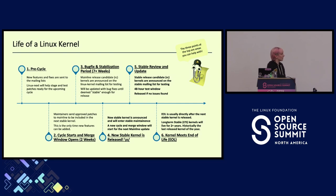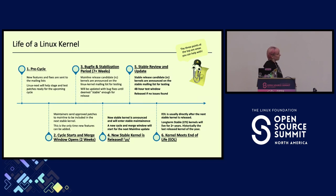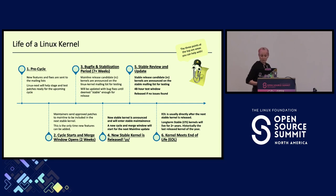Stable updates come about once a week, as needed. They get announced on the stable mailing list with a 48-hour test window and usually get released after RC1. These are great to test, especially for people just entering kernel contribution. At the very end, the kernel meets end of life — that is when a new stable kernel supersedes the prior one, or an LTS kernel reaches its end of support.